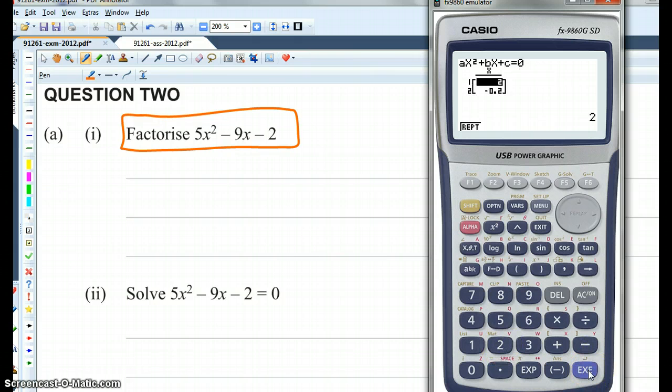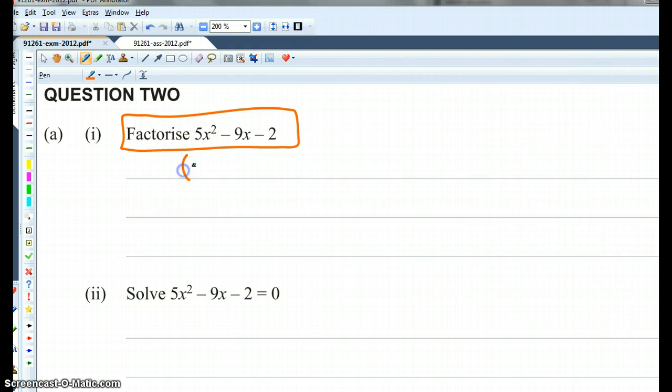Now this tells me the solutions are 2 and negative 1 fifth. So if I go down, you can see that's negative 1 fifth. So if a solution is 2, then a factor will be x minus 2. And if a solution is negative 1 fifth, then a factor will be x plus 1 fifth.